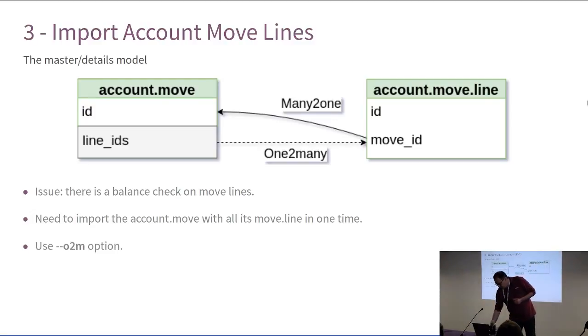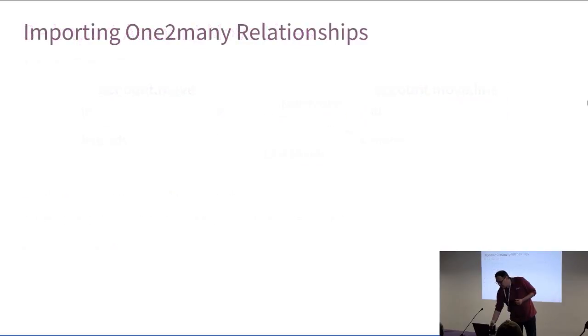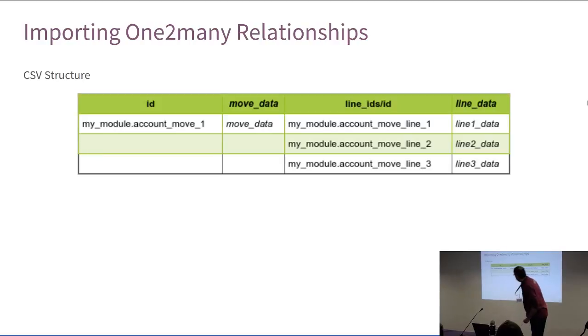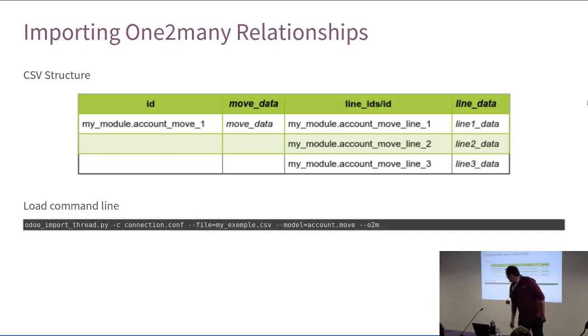And that's exactly the purpose of the --o2m option. So, how to import one-to-many relationships? Because o2m stands for one-to-many relationship. Simply, you can build a CSV file like this. You put in the same file your master data and all the child data. And you import like this. A simple command line with the --o2m option. It means that the account move and the move lines will be imported in one create operation.